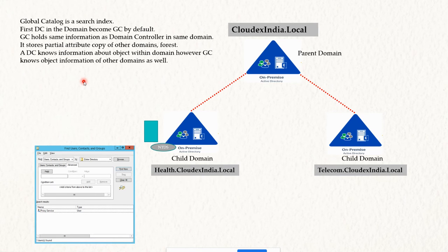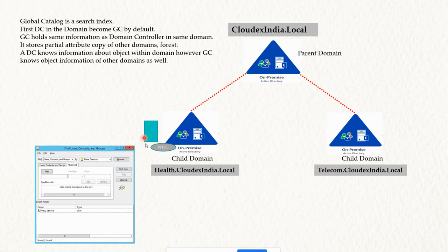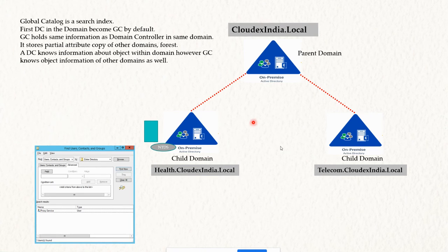A domain controller knows detailed information about the objects created within its own domain. To differentiate between a DC and a Global Catalog: a DC can give you full detail of whatever it stores, but a Global Catalog can provide information about objects within its own domain as well as objects from other domains within the forest.